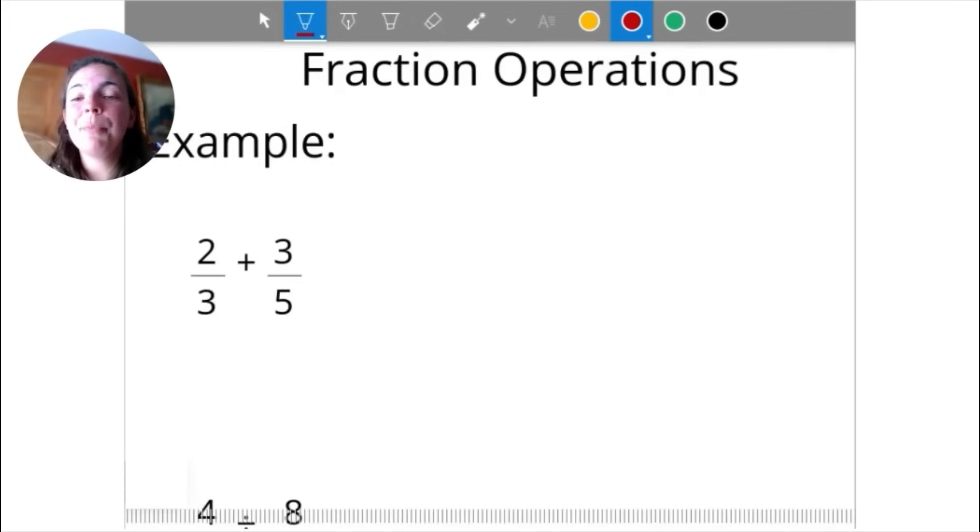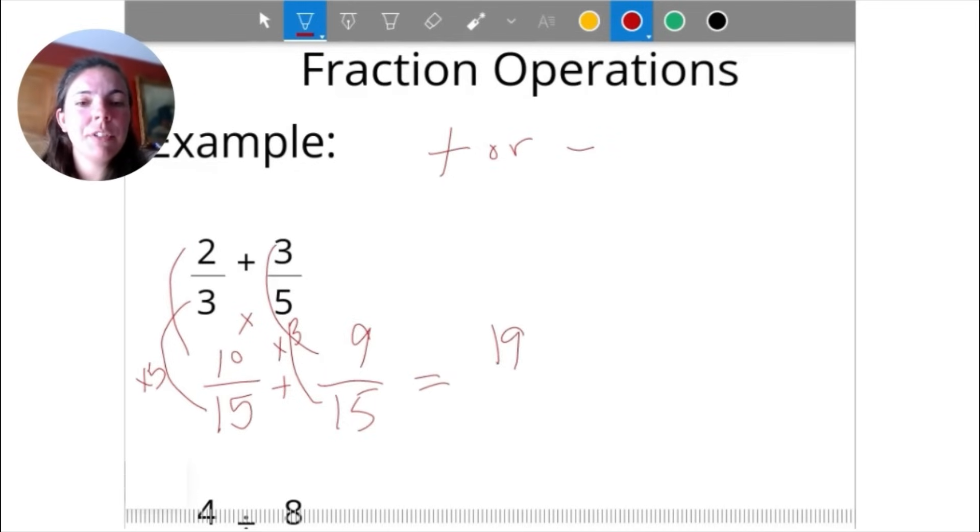Here's some fractional operations. 2 thirds plus 3 fifths. In order to add fractions or to subtract fractions, we need a common denominator. So 3 and 5, we're going to look for a multiple, which if we do 3 times 5, we get 15. I'm going to just create equivalent fractions, both of these over 15. 3 times 5 got me to 15, so I'll do 2 times 5 to get 10. 5 times 3 gives me 15, and 3 times 3 will give me 9. Then I just can add these together and I get 19 over 15. Oftentimes we're going to have to turn that into a mixed number. 15 goes into 19 one time with 4 left over, so my final answer would be 1 and 4 fifteenths.